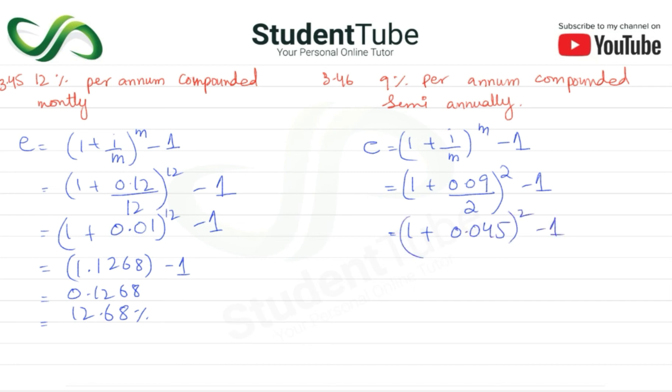(1.045)^2 minus 1. With the exponent, this becomes 1.092 minus 1, which equals 0.092. To convert to percentage, multiply by 100, giving 9.2%. These are the two questions. I hope you understand.